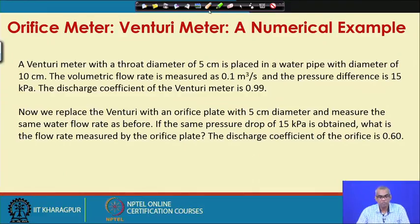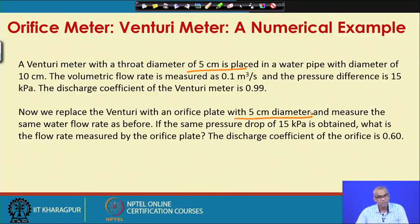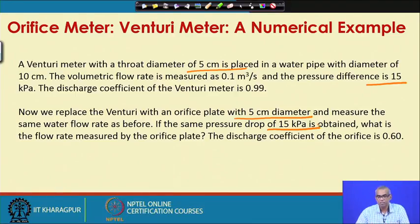So the problem is: a venturi meter of diameter 5 cm has discharge coefficient 0.99 and is measuring a flow of 0.1 m³/s. The same flow is then measured with an orifice plate of 5 cm diameter — note that both the venturi throat and orifice plate have the same 5 cm diameter. The same flow rate and same pressure drop exist in both cases. What will be the flow rate measured by the orifice plate, given that its discharge coefficient is 0.60?